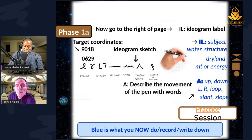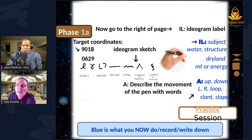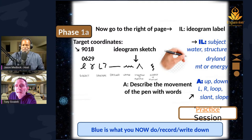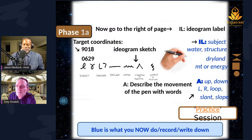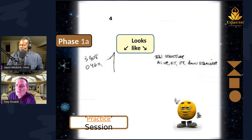Now go to the right of your ideogram sketch — to the far right of the page — put IL colon. What was that ideogram you just sketched out? Was it a subject, water, dry land, mountain or pyramid, or energy or motion? Simply write one of those words after the IL colon. An inch underneath that, put A colon, and describe the movement of that pen — the ideogram — with three, four, or maybe five different words on how you would describe that movement.